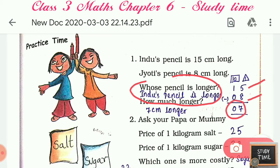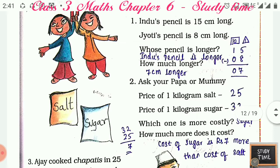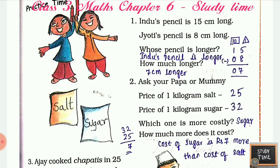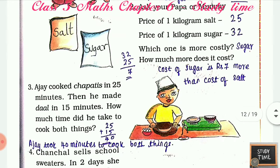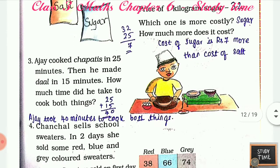Ask your papa or mommy the price of 1 kilogram of salt and the price of 1 kilogram of sugar, and write down which one is more costly. Here you can see sugar is more costly. How much more does it cost? The cost of sugar is rupees 7 more than the cost of salt — you have to subtract sugar minus salt.